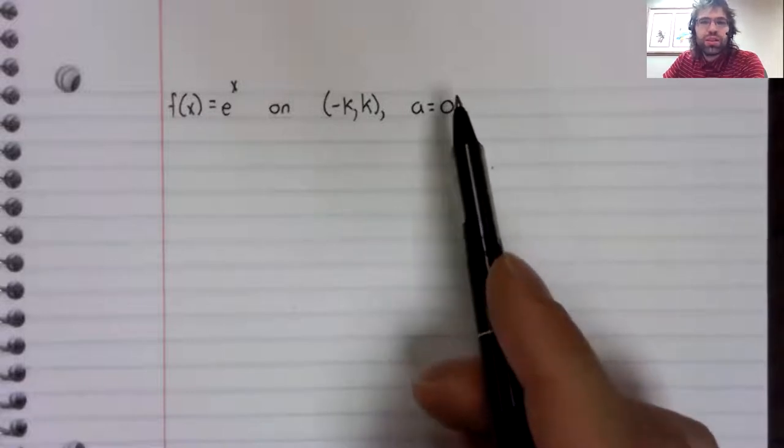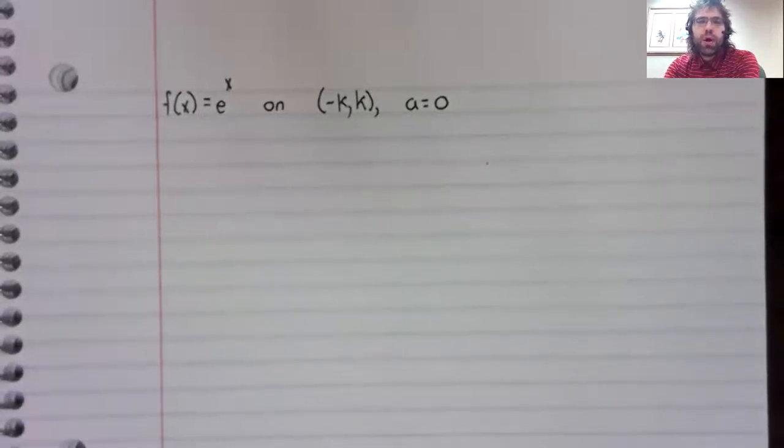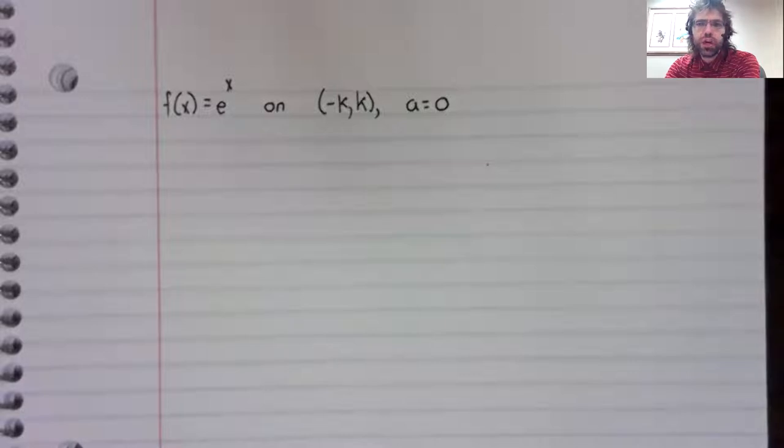So the Taylor series is centered at zero as well. And what we want, if the exponential function is to equal its Maclaurin series, is for the remainder to go to zero.